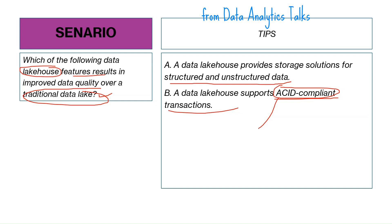ACID stands for Atomicity, Consistency, Isolation, and Durability. Atomicity means transactions are all-or-nothing — if one part fails, the whole transaction fails. Consistency means the transaction moves the database from one valid state to another, preserving all rules and constraints.